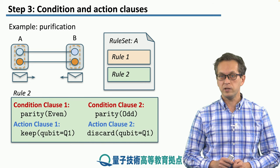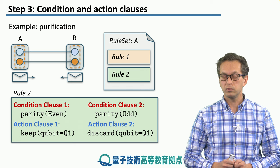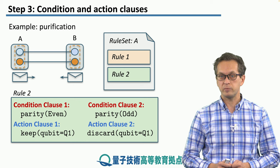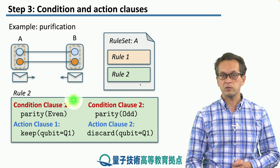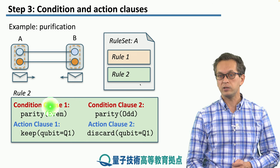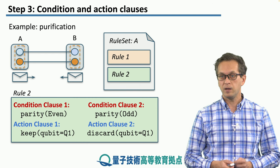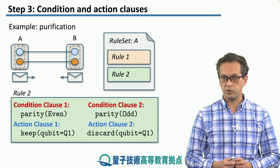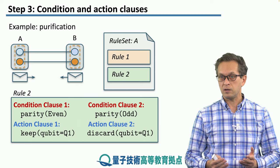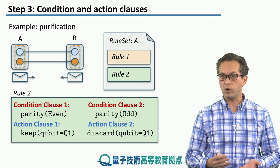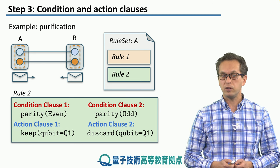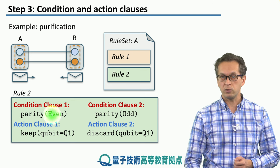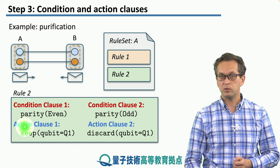After rule 1 is finished, we promote the resources to rule 2. And in this case, we have two condition clauses with two separate corresponding action clauses. Condition clause 1 checks whether the parity of the outcomes in the Z basis is even. In order for that to happen, node A first needs to receive the classical message from node B. And if the classical outcomes were 00 or 11, so if the parity is even, then we know that the correct action to do is to keep the bell pair. So the rule instructs node A to keep qubit 1.